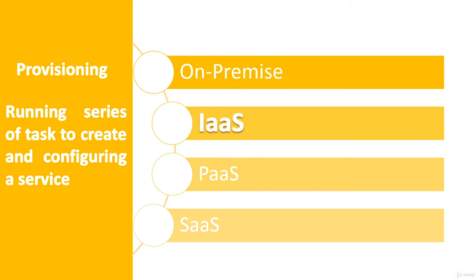IaaS, or Infrastructure as a Service, is the first approach to a cloud-based database solution. It enables you to create a virtual infrastructure that replicates any on-premises service. You don't have to concern yourself with buying or maintaining hardware, but you're still responsible for installing and upgrading all software with proper licenses. This approach is known as Lift and Shift, meaning you can copy your on-premise solution directly to a virtual machine with minimal changes.